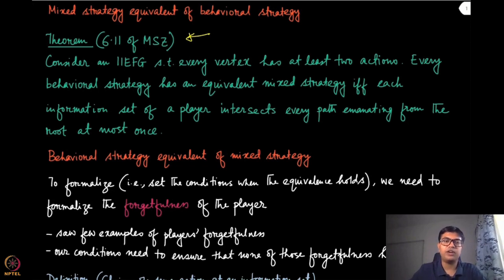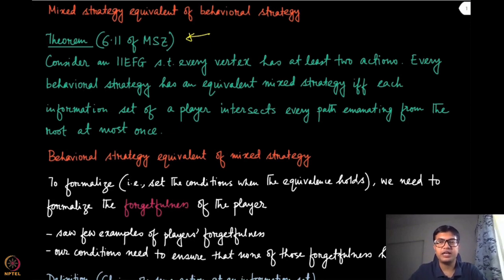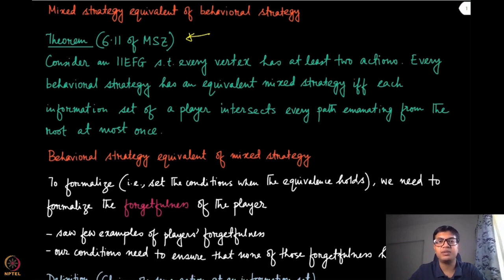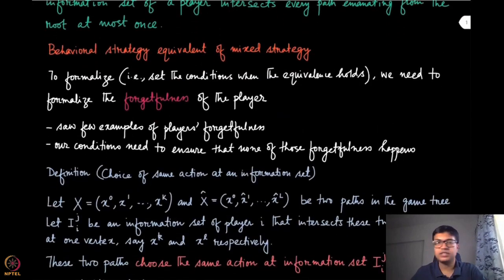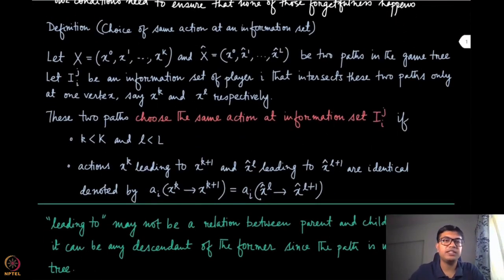In order to define that, we will have to capture what is meant by forgetfulness of a player. We have seen a couple of examples: one where the player forgets whether it has played at all, and another where the player forgets which action it has played. We will address both kinds of forgetfulness one by one, but before that we need to define something.